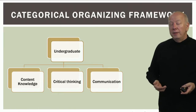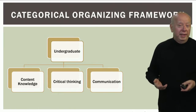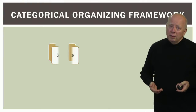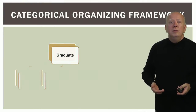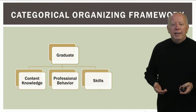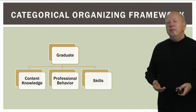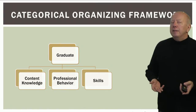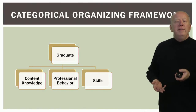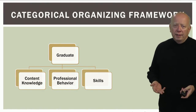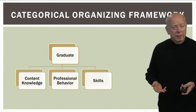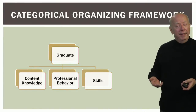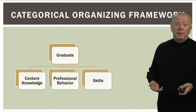All of our undergraduate degree programs have student learning outcomes within these three categories. Our graduate school has also developed three areas of student learning outcomes for graduate and professional programs: content knowledge, professional behavior, and skills. Most of our graduate and professional programs have submitted student learning outcomes in those three areas.